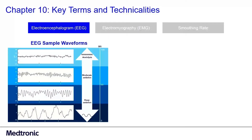Electroencephalogram, EEG. An electroencephalogram, or EEG, is a test that detects electrical activity in the brain using small electrodes. The electrical activity is displayed as wavelengths.